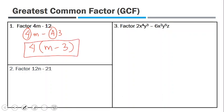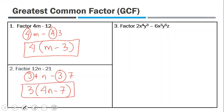For number 2, we have 12 and 21. So 12 is also 3 multiplied by 4 multiplied by n, and 21 is 3 multiplied by 7. You can see that these two have 3 in common, so we can factor out the 3. So it's going to be 3 times 4n minus 7.